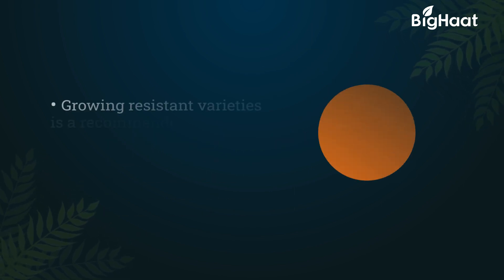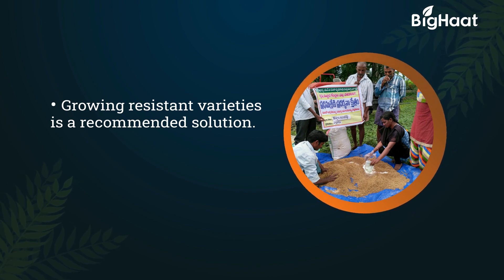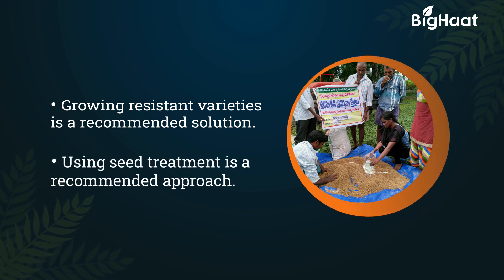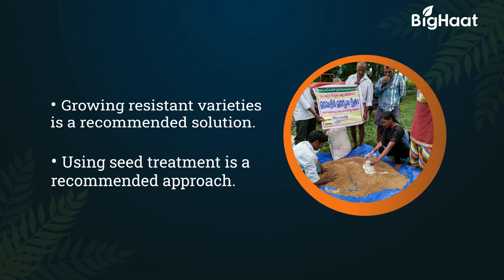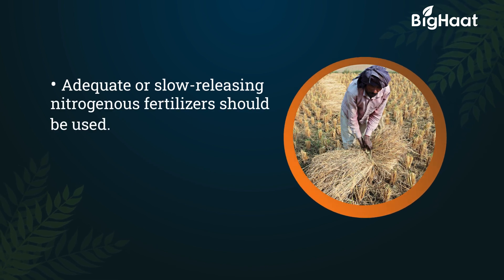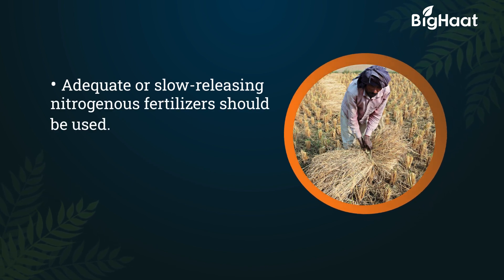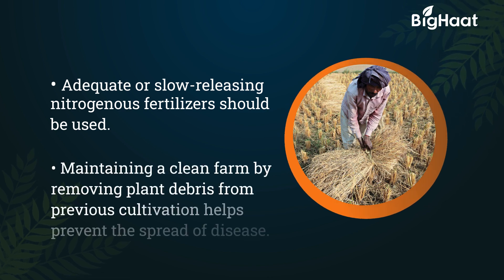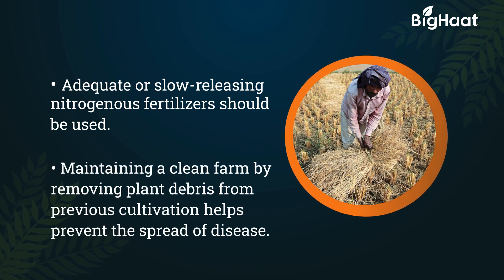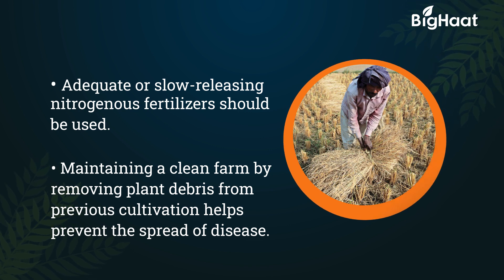Growing resistant varieties is a recommended solution. Using seed treatment is a recommended approach. Adequate or slow-releasing nitrogenous fertilizers should be used. Maintaining a clean farm by removing plant debris from previous cultivation helps prevent the spread of disease.